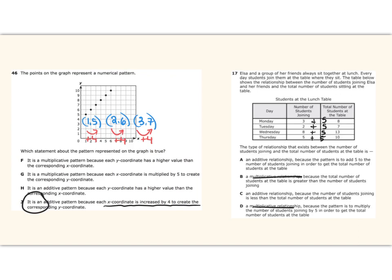So now let's look at choice A. It says an additive relationship because the pattern is to add 5 to the number of students joining in order to get the total number of students at the table. And that's right. The number of students joining plus 5 is the number at the table. So this looks good to me. Choice C says an additive relationship because the number of students joining is less than the total number of students at the table. So that's not right. It's not less than that. We know it's answer choice A, and that's the sort of work that we want to see our fifth graders doing with numeric patterns in verbal descriptions, graphs, and tables.